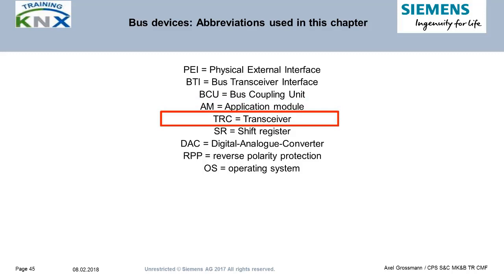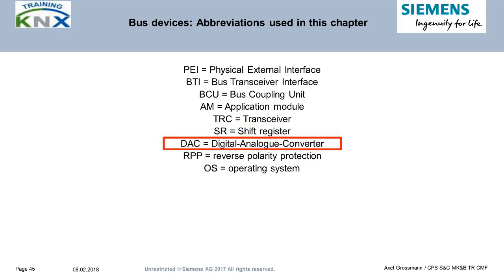TRC is the part of the BCU that deals with transmitting and receiving bus telegrams. Today it is only an ASIC; in the past it was a small electronic board inside a BCU. SR stands for Shift Register — in some applications, data between the AM and BCU are exchanged by means of a shift register. DAC stands for Digital Analog Converter.